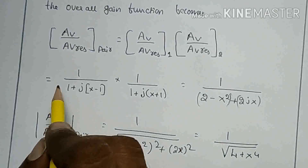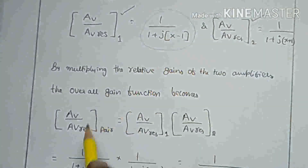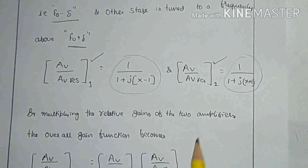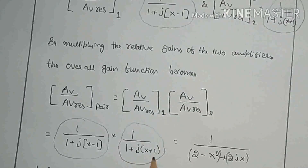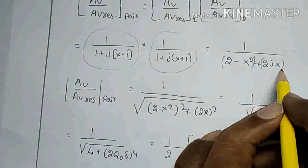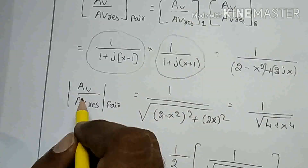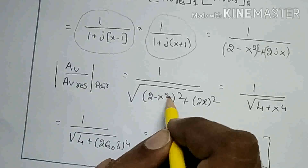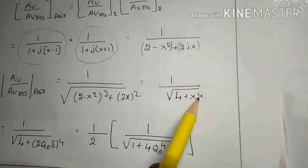The overall gain function is obtained by substituting: AV/AV-resonance of the first stage equals 1 over (1 + j(x − 1)), and AV/AV-resonance of the second stage equals 1 over (1 + j(x + 1)). Taking the product of these two gains and simplifying, we get 1 over (2 − x² + 2jx). Taking the modulus, the magnitude of AV/AV-resonance of the pair equals 1 over √((2 − x²)² + (2x)²), which simplifies to 1 over √(4 + x⁴).